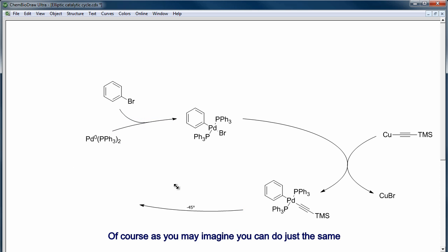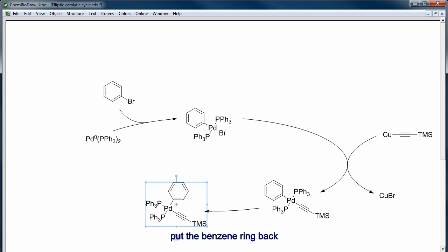Of course, as you may imagine, you can do just the same with a perfectly circular arrow, but I like fancy. Now the isomerization step. We move this, adjust the triphenylphosphine, and then put the benzene ring back. And now one last time, duplicate the arrow, overlay it back, and adjust both ends like this.